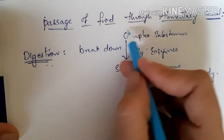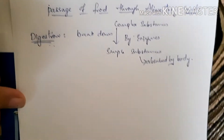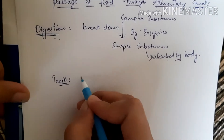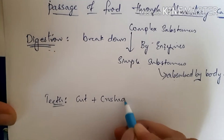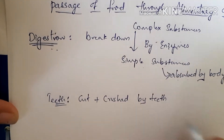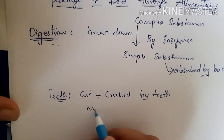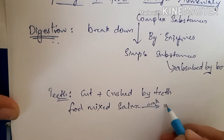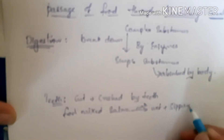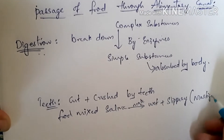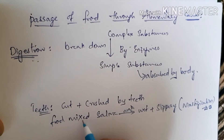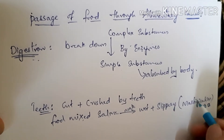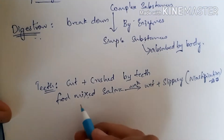Let us see the passage of food through the alimentary canal. First, let us see the function of teeth. Food is cut and crushed with the help of teeth and mixed with saliva, which makes it wet and slippery in nature. This process is called mastication, which is very important for one mark.